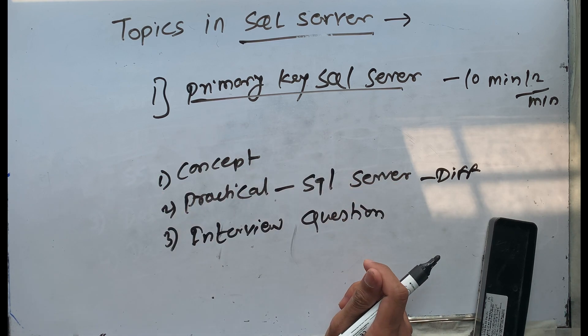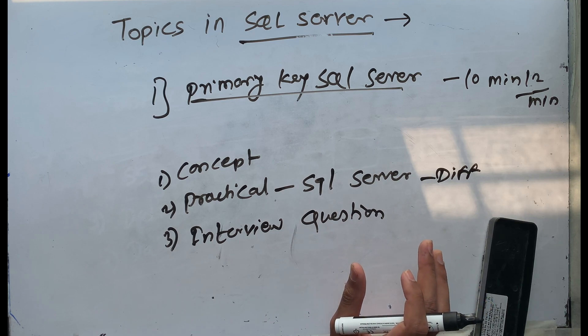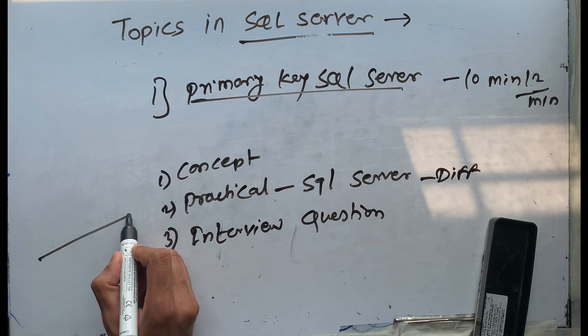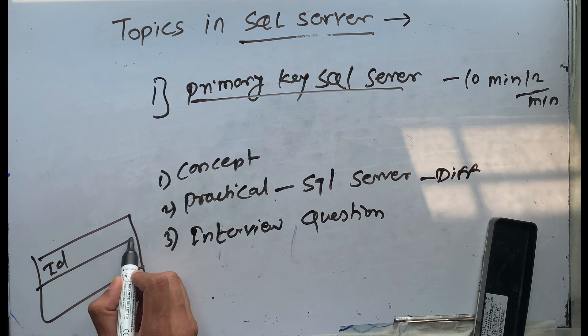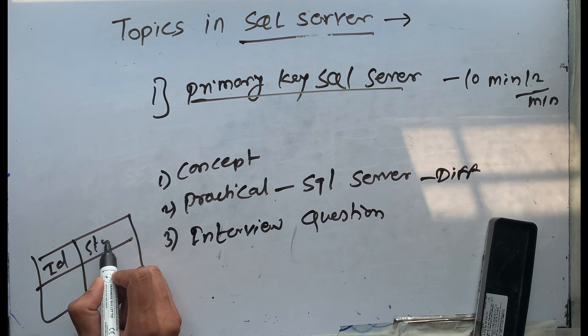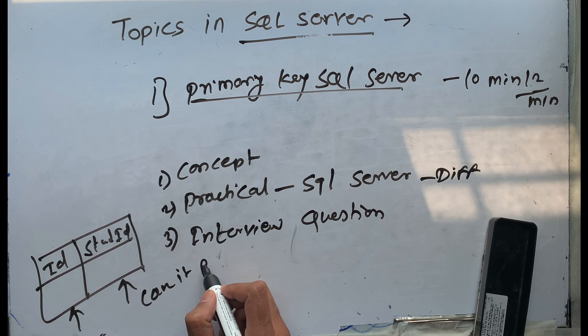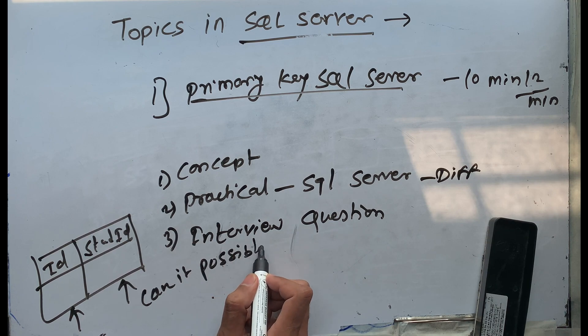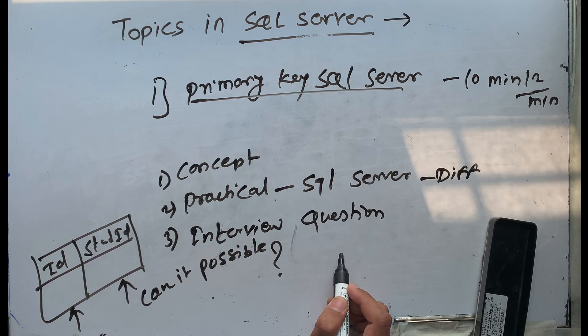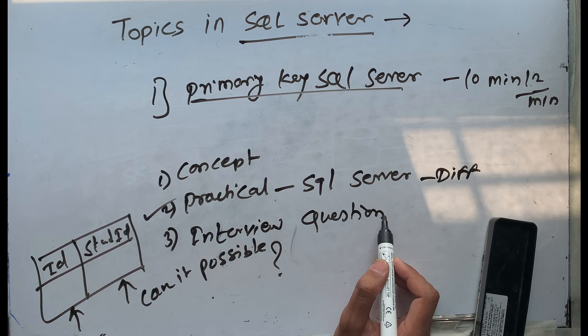For example, suppose we create a primary key - in the background a clustered index will be created, no problem. But if there is one table with an ID column and a student ID column, and I have to create the primary key on the ID column and create a clustered index on the student ID column, can it be possible? Yes. How to do that - all these things I will explain in the practical section.